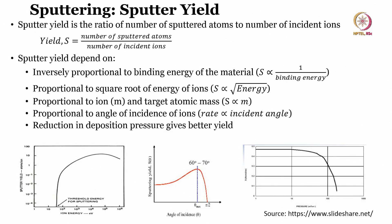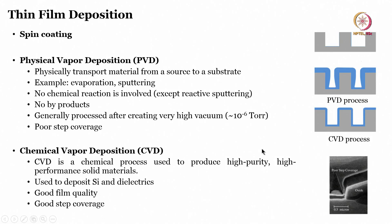The plots shown here display sputter yield versus ion energy — yield increases and then saturates with increasing energy — as well as sputtering yield versus angle of incidence and versus pressure. Several factors come into play when going for sputtering-based deposition.